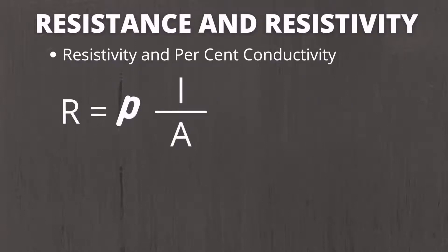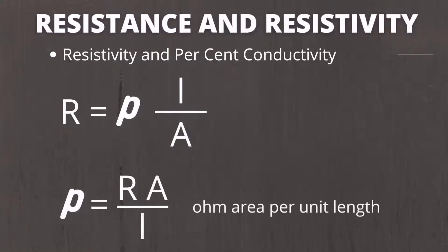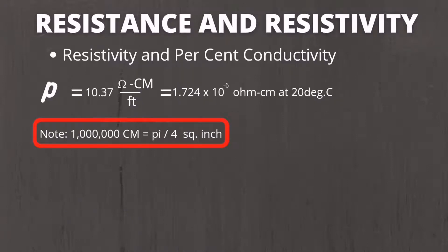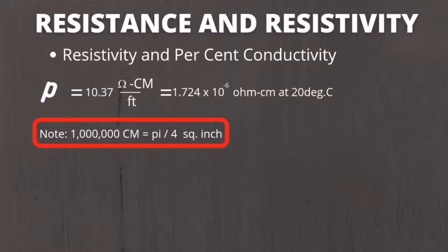Let's go to the first topic: resistivity and percent conductivity. As we all know, the formula of resistance is R equals rho times L divided by A. If we have to find rho, then it will be rho equals R times A divided by L. We will use annealed copper as our basis for calculation. The resistivity of annealed copper is equal to 10.37 ohm circular mil over feet at 20 degrees Celsius. This value of resistivity can also be expressed in metric units, which we are going to use in solving percent conductivity.